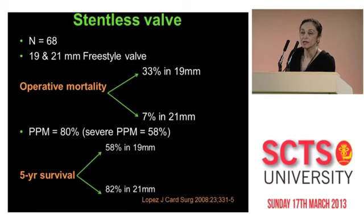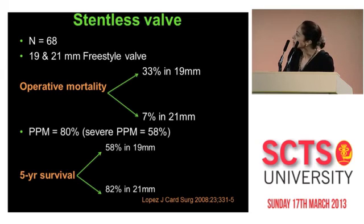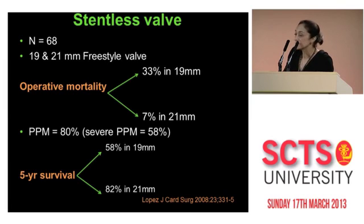What about stentless valves and patient prosthesis mismatch? In a study of 400 patients, 68 underwent a freestyle stentless valve — again from Canada, from Dr. Barrow's group. They looked at 19 and 21 mm freestyle valves. The operative mortality was very high: 33% in 19 mm and 7% in 21 mm. The rate of patient prosthesis mismatch was high at 80%, and severe in about 60% of those. Five-year survival was 60% for 19 mm and 82% for 21 mm.